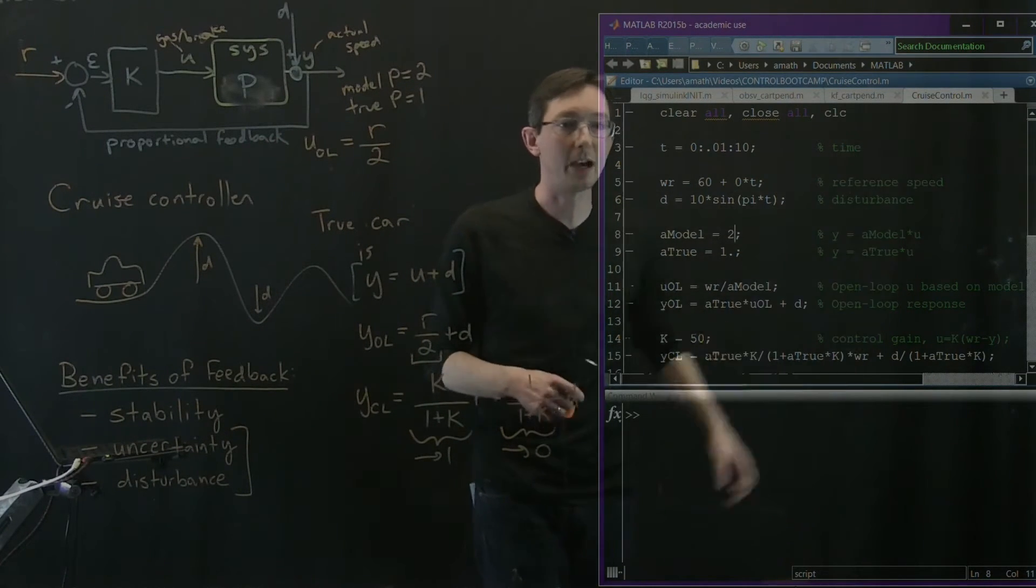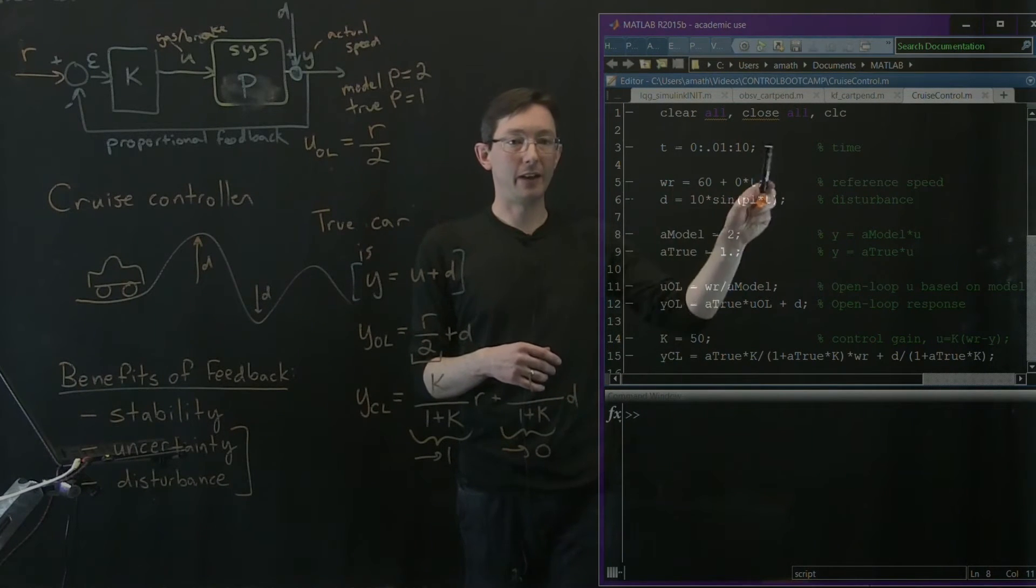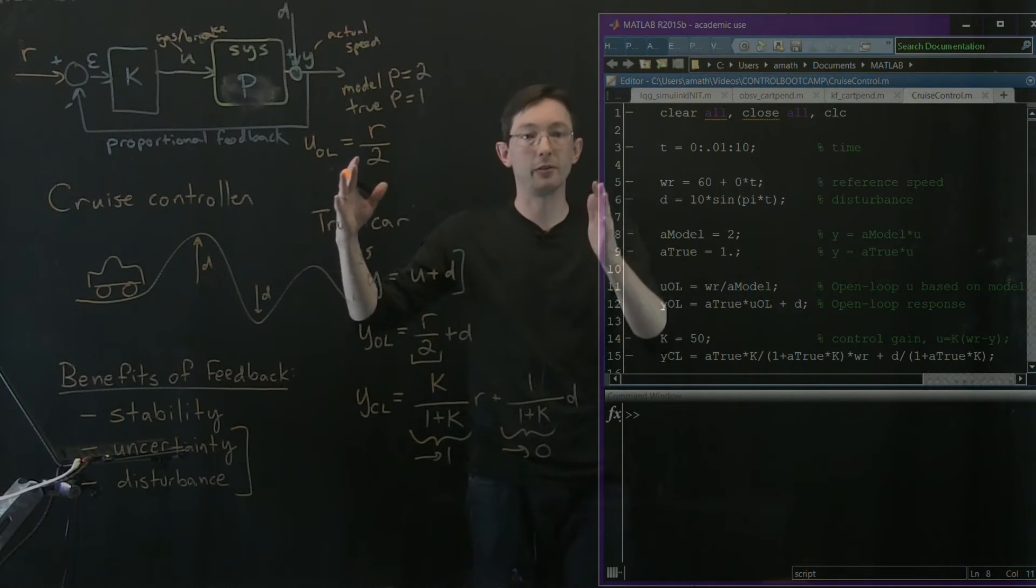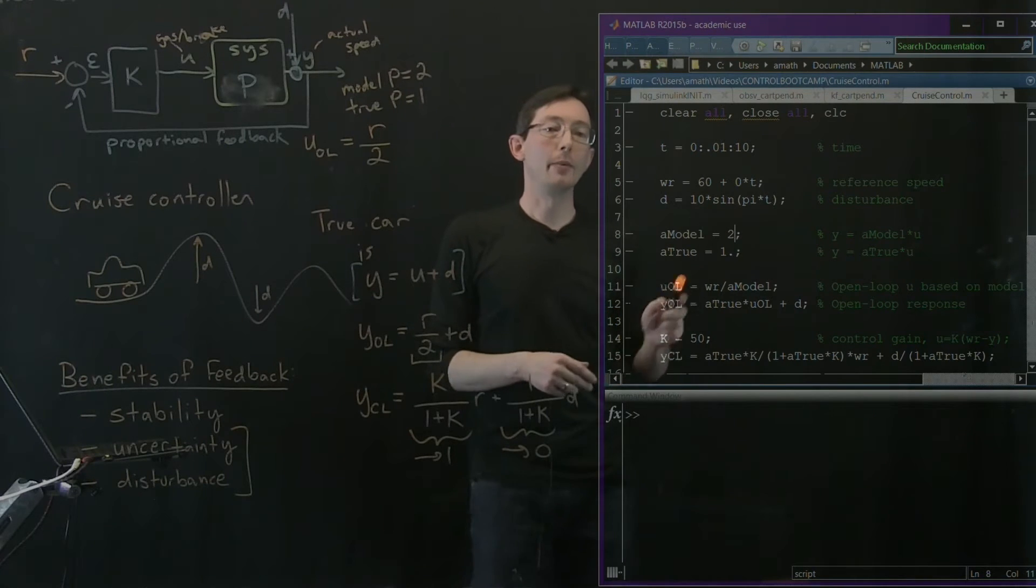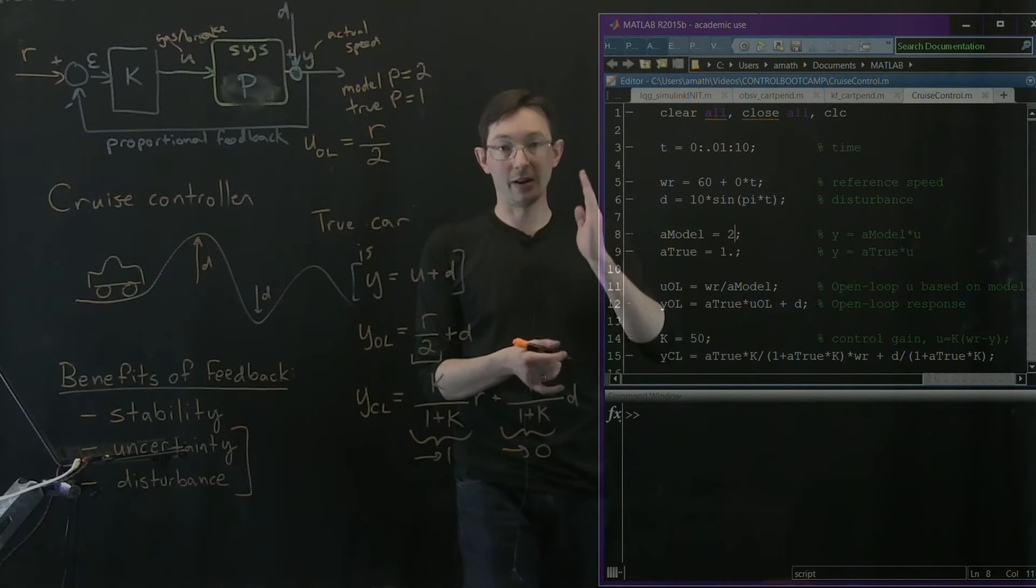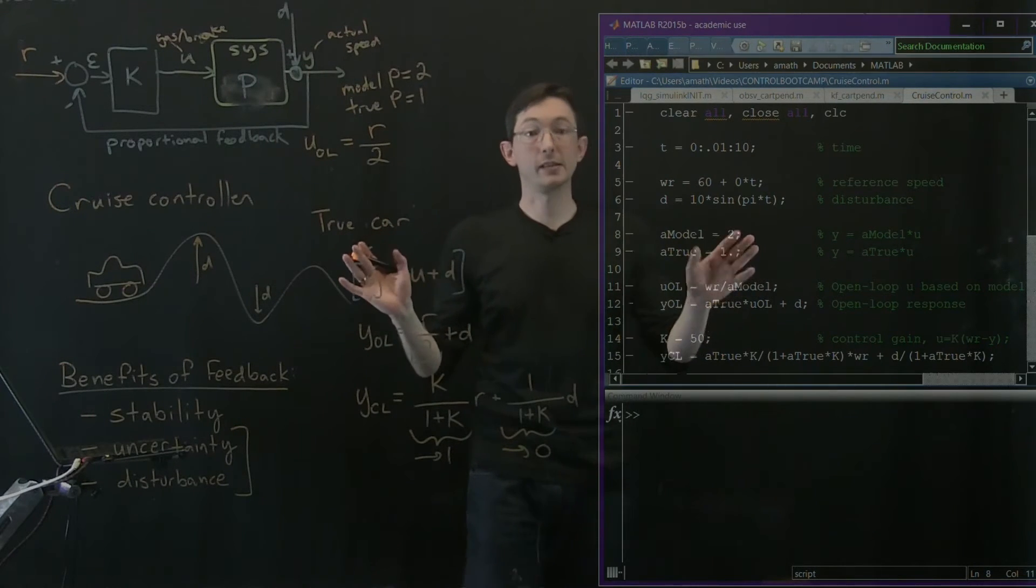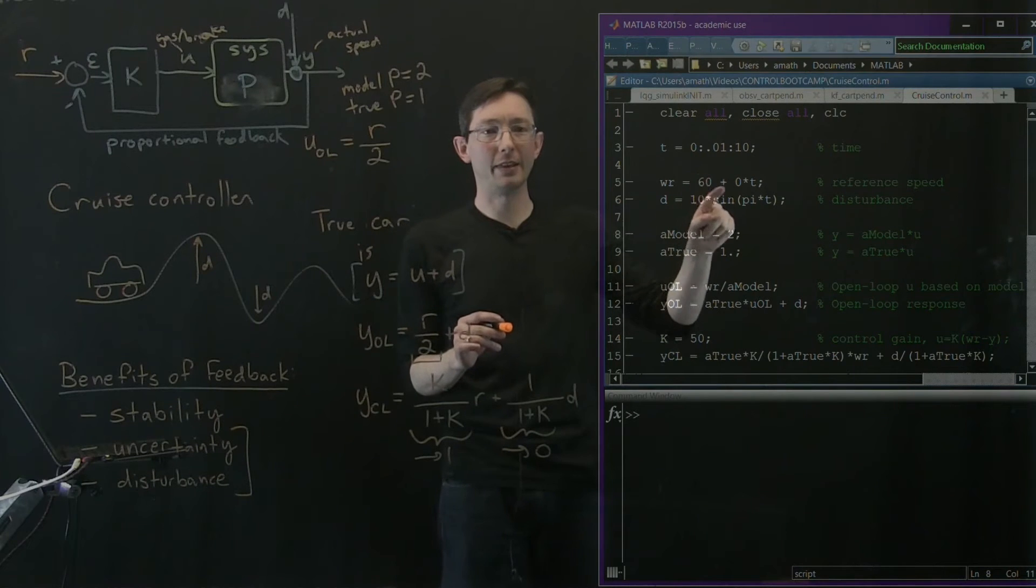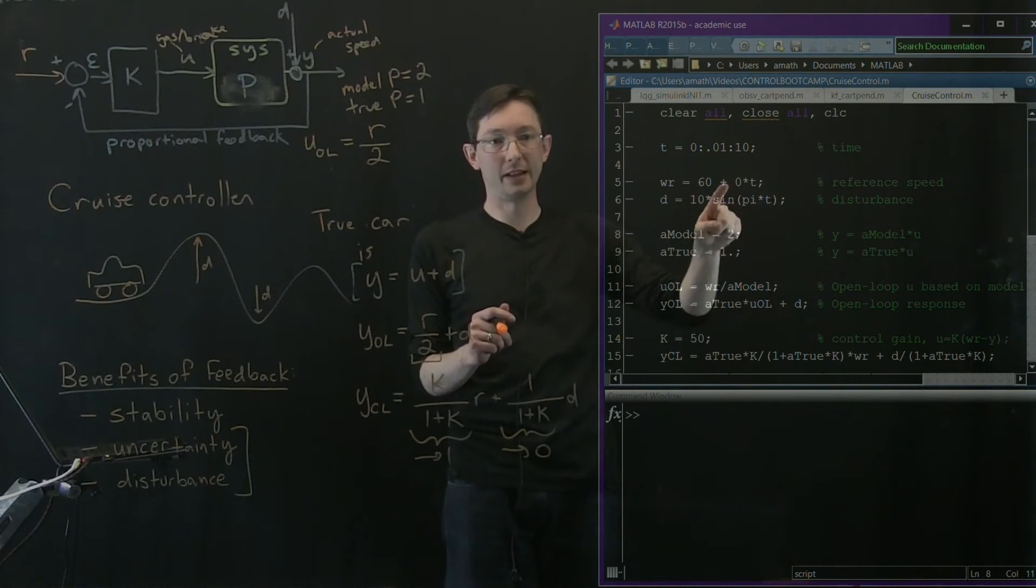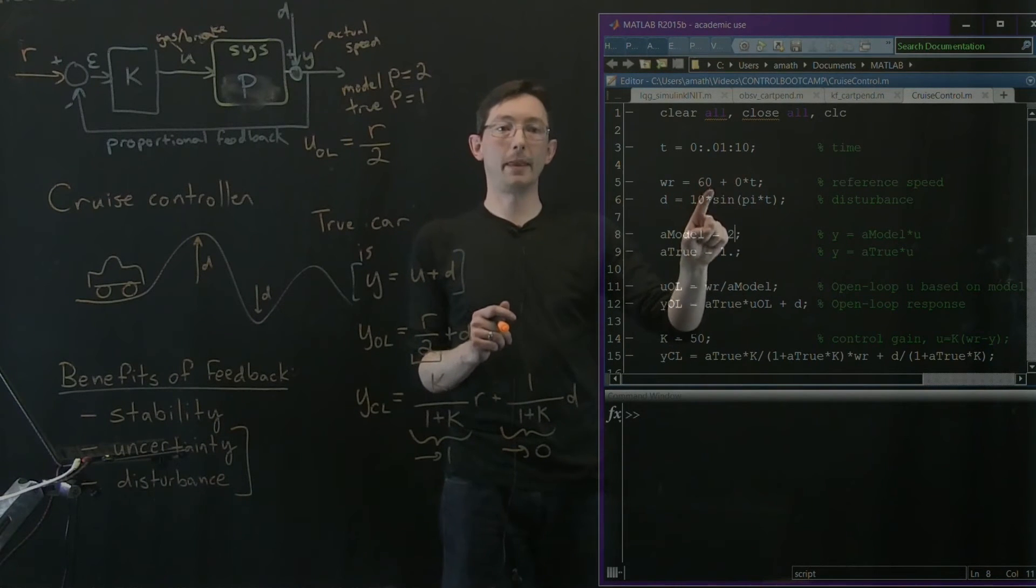So this is a pre-made script to run this. It's called CruiseControl.m and the first thing I'm going to do is define a time vector from 0 to 10 in increments of 0.01. So I'm going to integrate my car model for 10 seconds. I'm going to say that my reference speed, my desired reference speed is 60 miles per hour. So I want my car to go 60 miles per hour, no more, no less. And the way I get this is actually a vector of 60s as long as time. So I take 60 plus 0 times time. That makes a big zero vector and I add 60 to it.